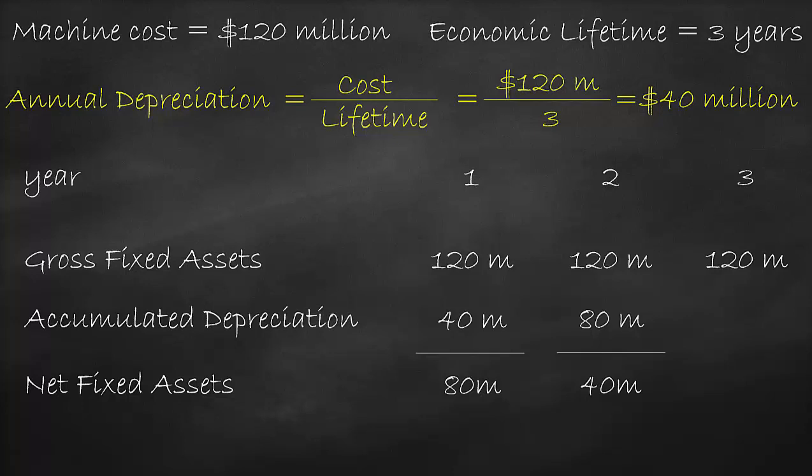For the third year, we used the machine for 3 years, meaning the accumulated depreciation is now up to $120 million, which was calculated by adding the depreciation of the first, second, and third year. Consequently, the value of the machine after 3 years is $120 million minus $120 million, which is equal to $0, which is the net fixed asset value for year 3.